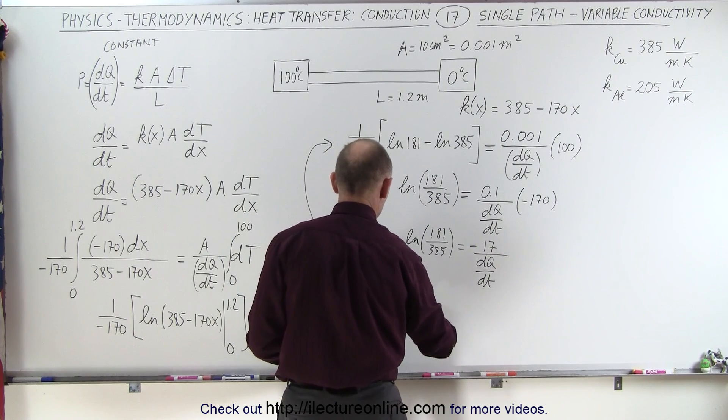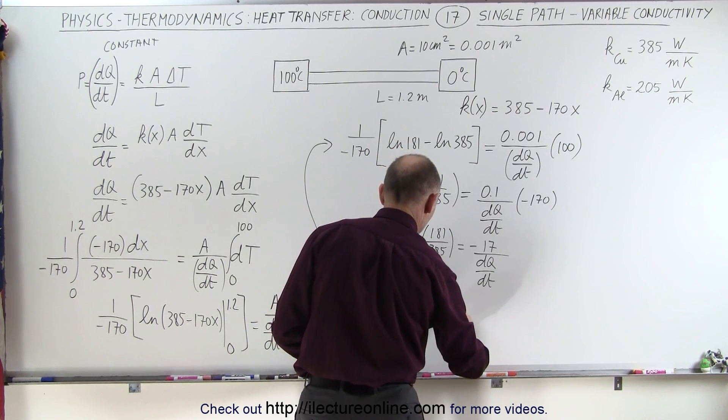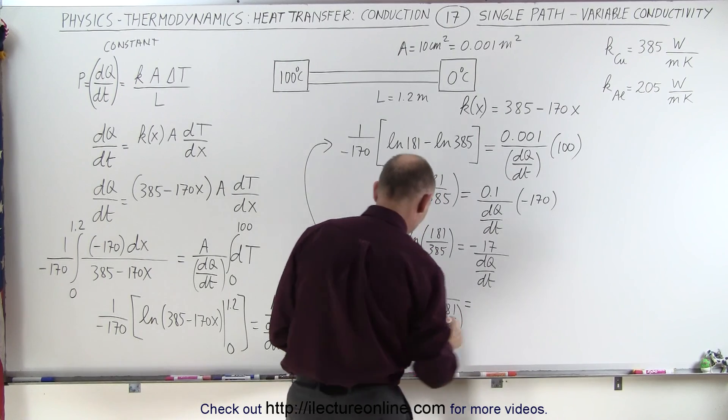And finally, dQ/dt, what we're looking for, is equal to minus 17 divided by the natural log of the fraction 181 divided by 385. Now we're ready to evaluate this.